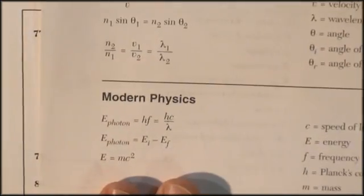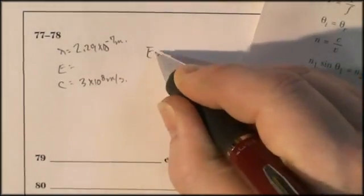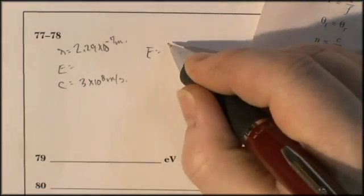3 times 10 to the 8 meters per second. The h thing right there. Let's write this formula down. Let's write it over here. Energy of a photon is equal to hc over lambda.